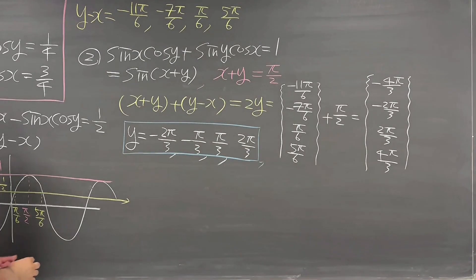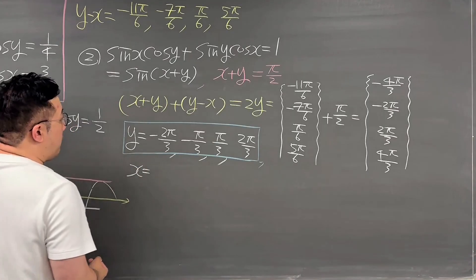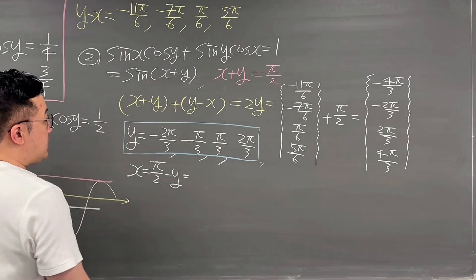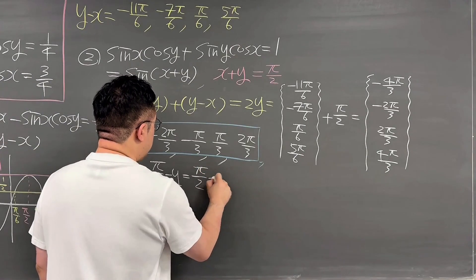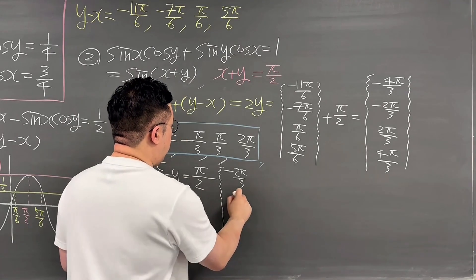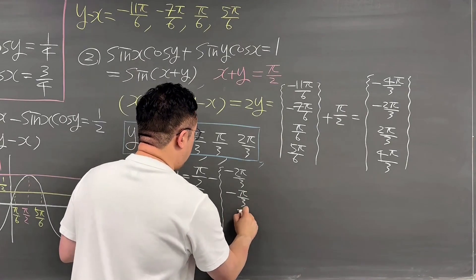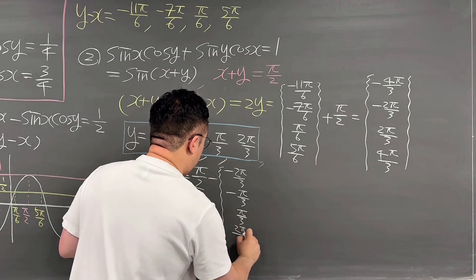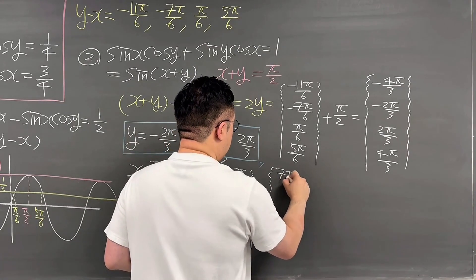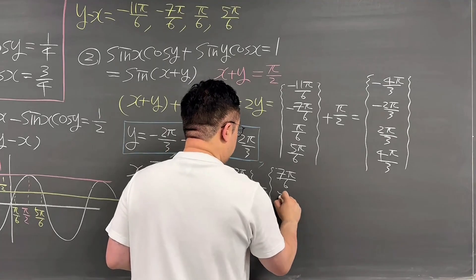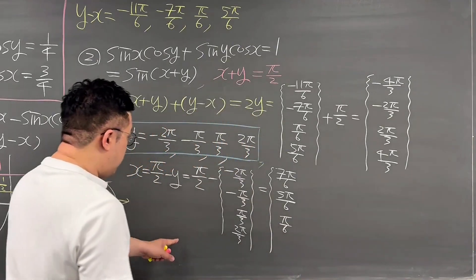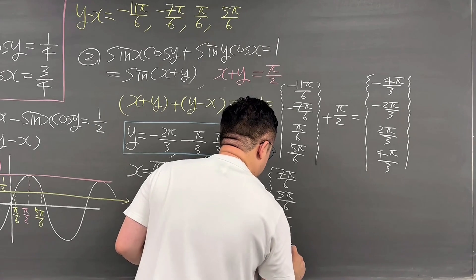To find x, we use x equals pi over 2 minus y. Substituting each value of y — negative 2 pi over 3, negative pi over 3, pi over 3, and 2 pi over 3 — we get x equal to 7 pi over 6, 5 pi over 6, pi over 6, and negative pi over 6.